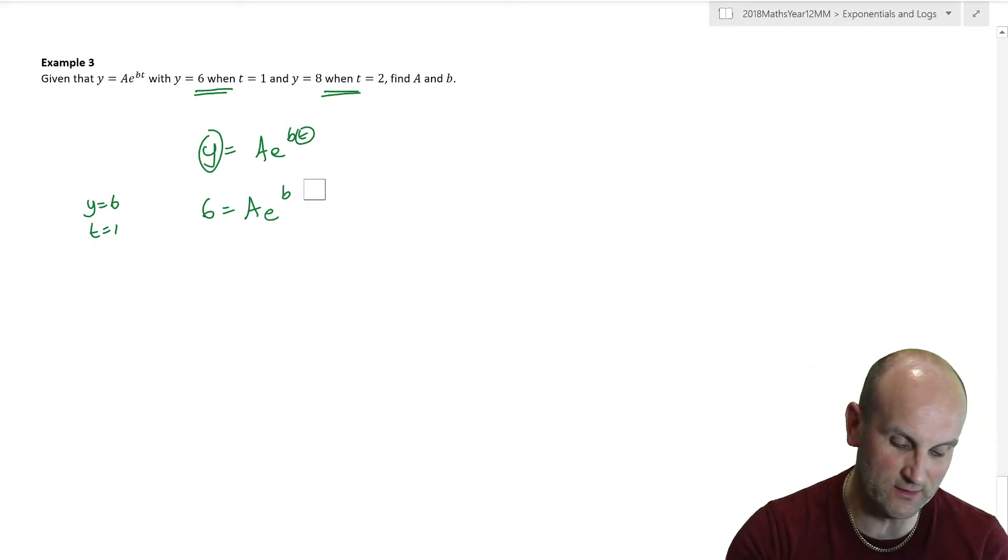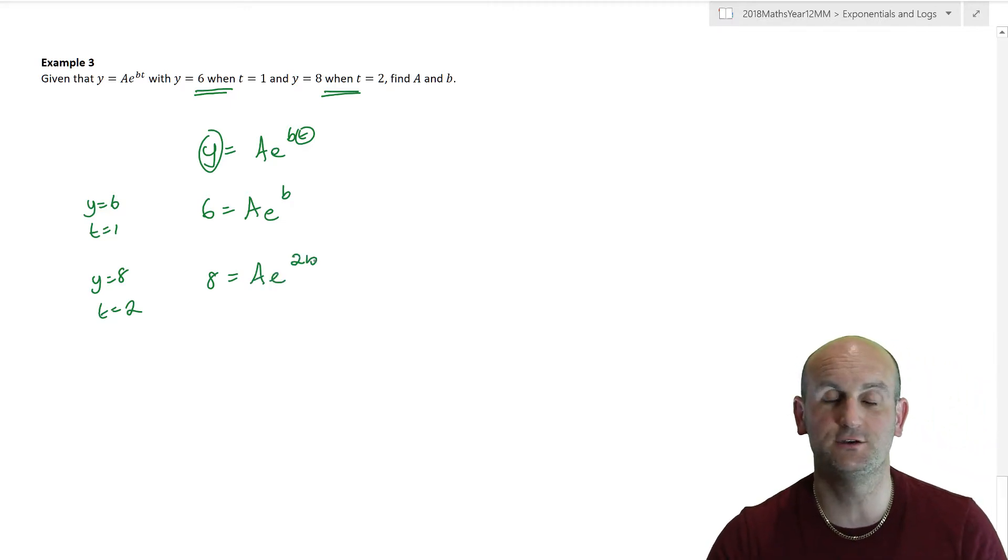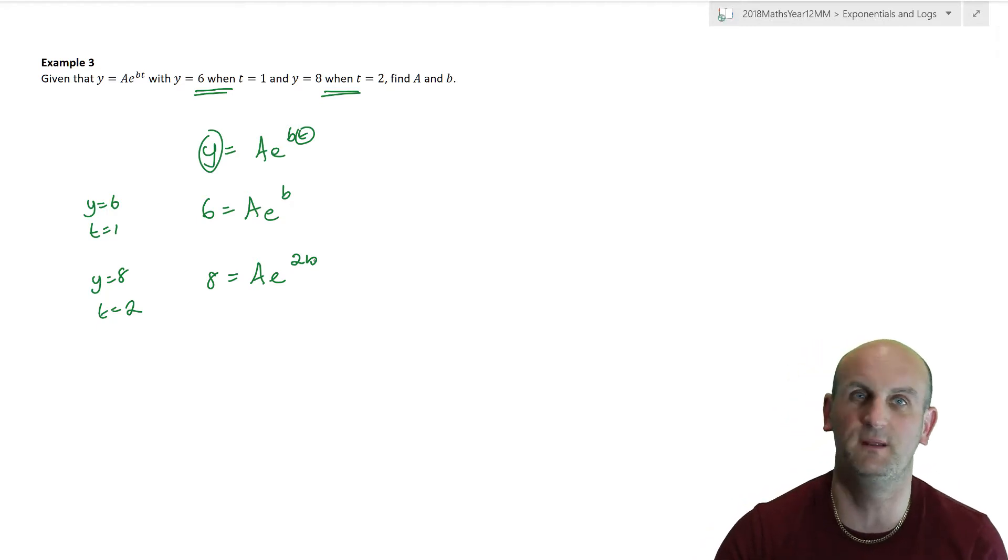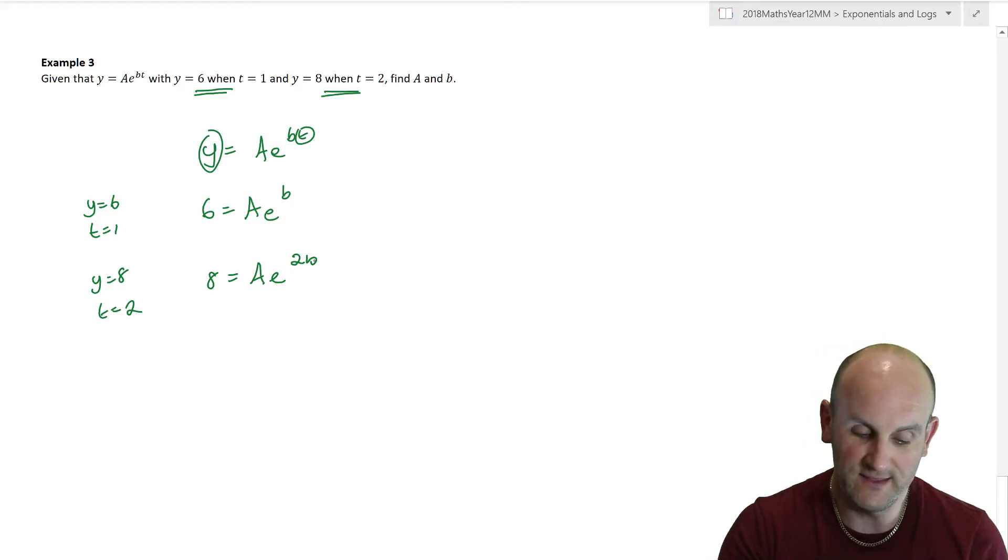So I now know that y equals 6 when t equals 1, so I'm now going to say 6 is equal to a, e to the b times 1. Well b times 1, I don't need to worry about it because it's just b. And then what was the other one? y is equal to 8 when t is equal to 2, so again 8 is equal to a, e to the 2b. Right, I have two equations and you're going to say, how do I solve those? And again we solve it using a bit of an algebra trick. Again, use your calculator, test it on your calculator if you need to, but remember over here in Australia there are non-calculator papers where you would still have to be able to demonstrate doing this by hand.